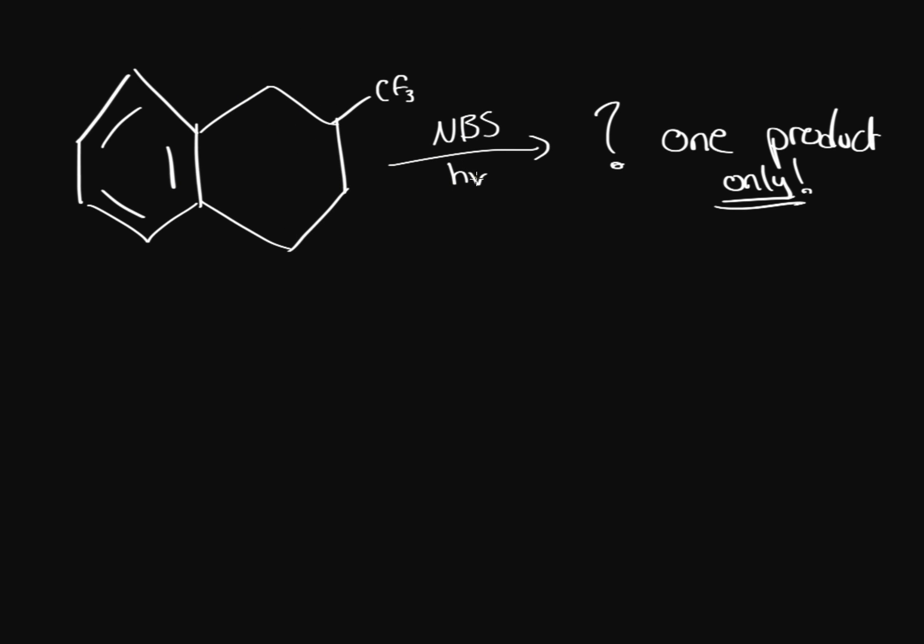And we're going to use UV light which indicates that we're going to have free radical formation. Now what is the most stable carbon on this entire molecule? Let's consider all the possible types. Well, we have benzene carbons like over here.